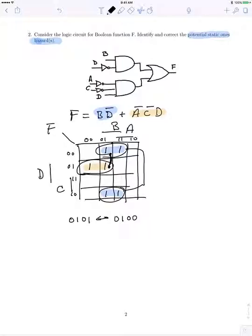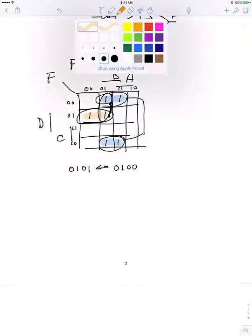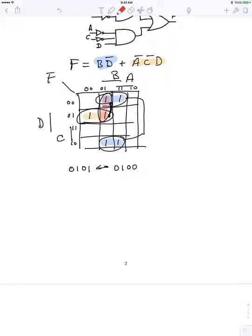So we fix that by adding another circling so that we don't have to switch groups. If we add this product term, reading the Karnaugh map...